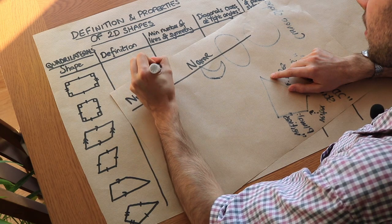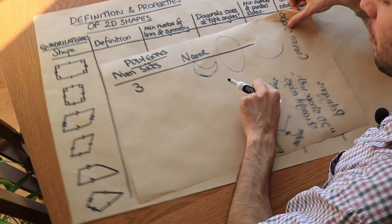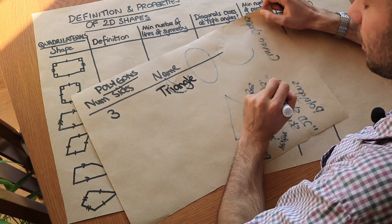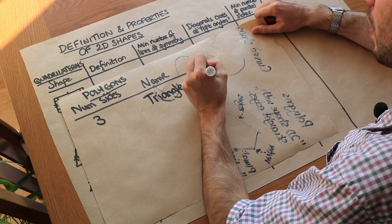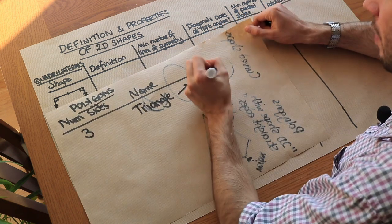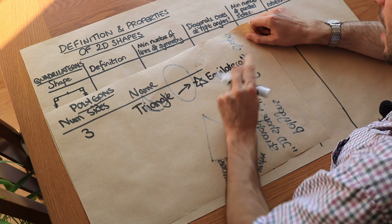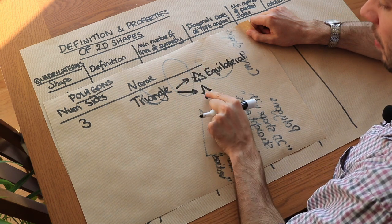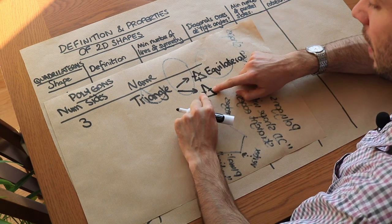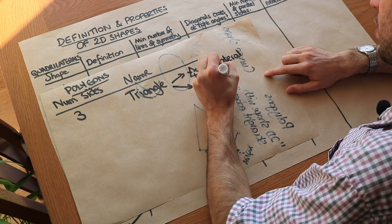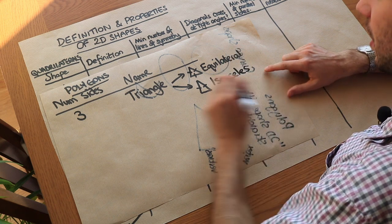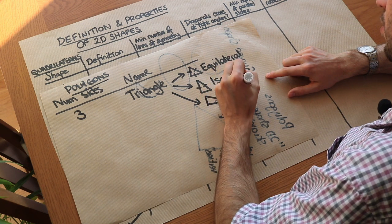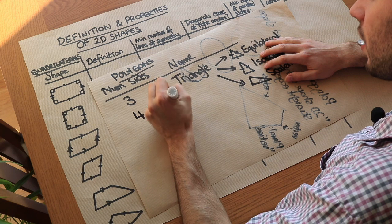Now let's consider the names of the different polygons with different numbers of sides. A three-sided polygon is a triangle. There are three types: if all sides are equal length, it's an equilateral triangle; if two sides are the same length, it's isosceles; and if all sides are different, it's a scalene triangle. Four-sided polygons are known as quadrilaterals.